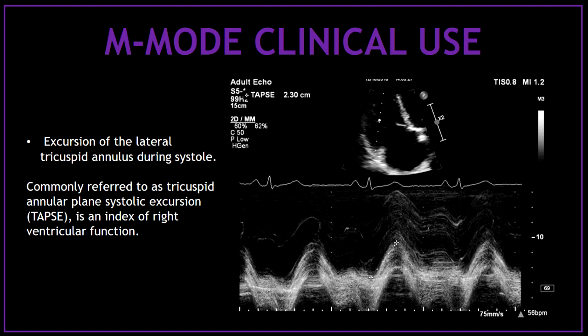We also use the M-mode to assess the longitudinal systolic function of the right ventricle. With the M-mode, we can measure the excursion of the lateral tricuspid annulus during systole, also known as TAPSE. TAPSE is an index of right ventricular function.